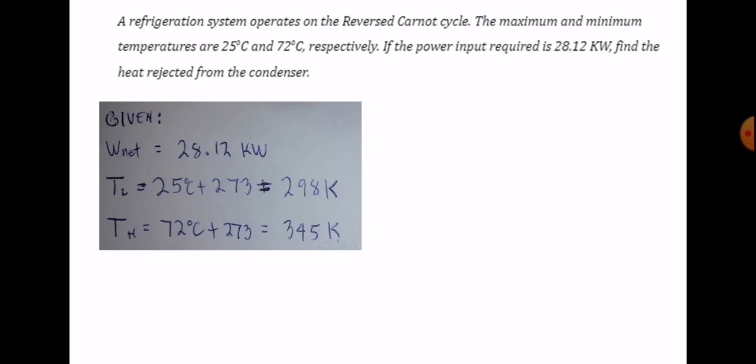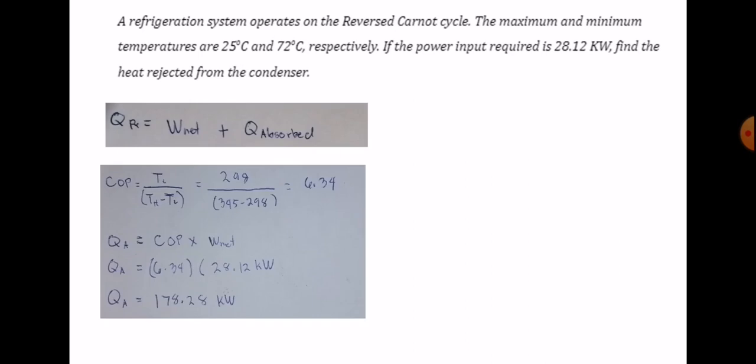Our temperatures will be converted into Kelvin: 25 degrees plus 273, and 72 degrees plus 273 to get 345 Kelvin. In order to get the heat rejected, first we need to find the COP or coefficient of performance.